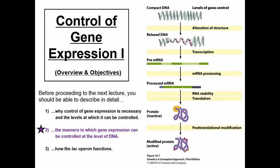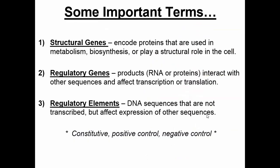Now I want to talk about the manners in which gene expression can be controlled. You can control gene expression at the level of DNA, at the level of RNA, or at the level of proteins. Sometimes it happens simultaneously, sometimes it doesn't. We'll talk about the pros and cons later on, but let's focus on DNA for the time being.